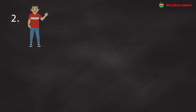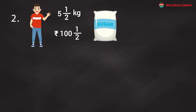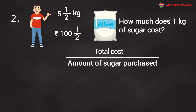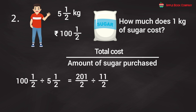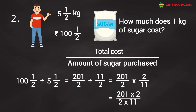Problem 2: A man purchased 5.5 kg of sugar for Rs. 100 and 1/2. How much does 1 kg cost? Cost per kg = total cost ÷ amount = 201/2 ÷ 11/2 = 201/2 × 2/11 = 402/22 = Rs. 18. Therefore, the cost of 1 kg of sugar is Rs. 18.